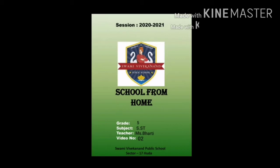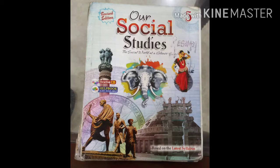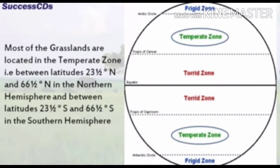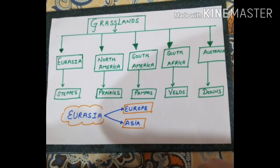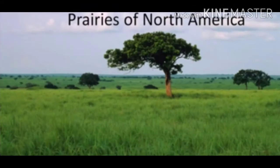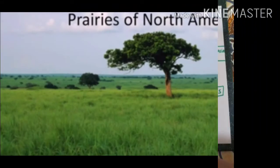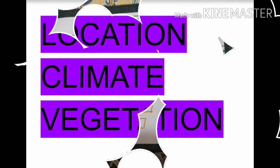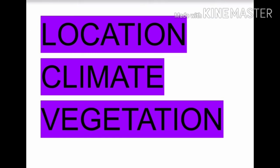Students, welcome to the second day of SST class. Yesterday we started Chapter 6, in which we read about temperate zones, types of grasslands, and began with the introduction of prairies. We covered how grasslands in different continents are named by different names. Today we will be studying the location, climate, and vegetation of prairies only.